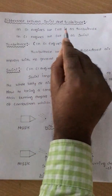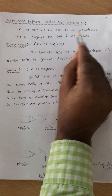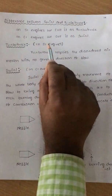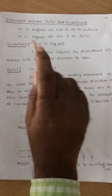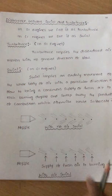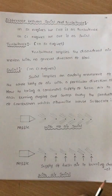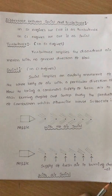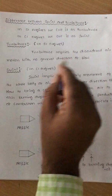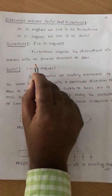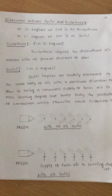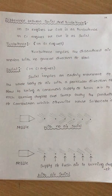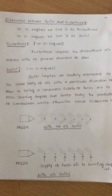In SI engines, we call it turbulence. In SI engines, we call it swirl. Turbulence, especially in SI engines, implies the disordered air movement with no general direction of flow — it will go as it wants. Such a movement is called turbulence.